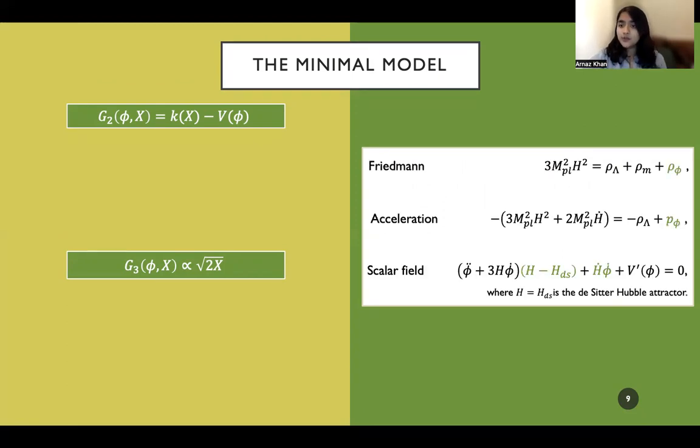The Friedman equation, as you can see, is modified by this energy density contribution from the field. The acceleration term here is modified by a pressure contribution from the field. And the scalar field equation is simply modified by this h dot phi dot term here, which basically is what allows the self-tuning. And this h minus h-desitter term here, where h-desitter is the Hubble attractor that we use. And that is what will determine what the expansion rate at present is, despite the value of the vacuum energy density.